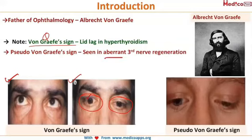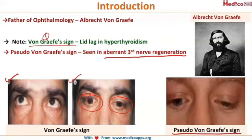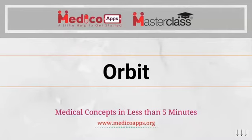There is another related sign called the pseudo von Graefe sign. It is seen in aberrant third nerve regeneration — when the third nerve is subjected to trauma and cut off, it does regenerate but innervates the wrong site, causing this sign known as the pseudo von Graefe sign. Please remember these points.